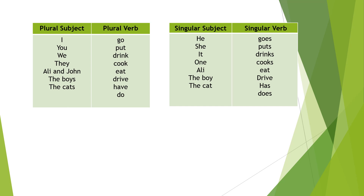When you look at plural subjects, you have: I, you, we, they — and plural nouns like 'the boys' or 'the cats'. All these are considered plural subjects. But I and you are special — I is one person, you is one person, but they still count as plural subjects. Singular subjects are: he, she, it, one — and singular nouns like 'Ali', 'the boy', 'the cat'.